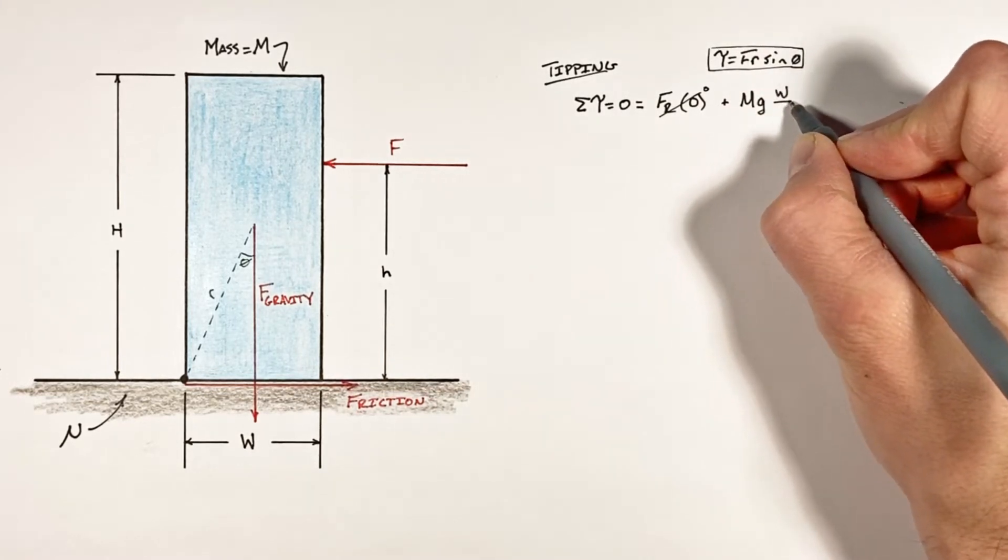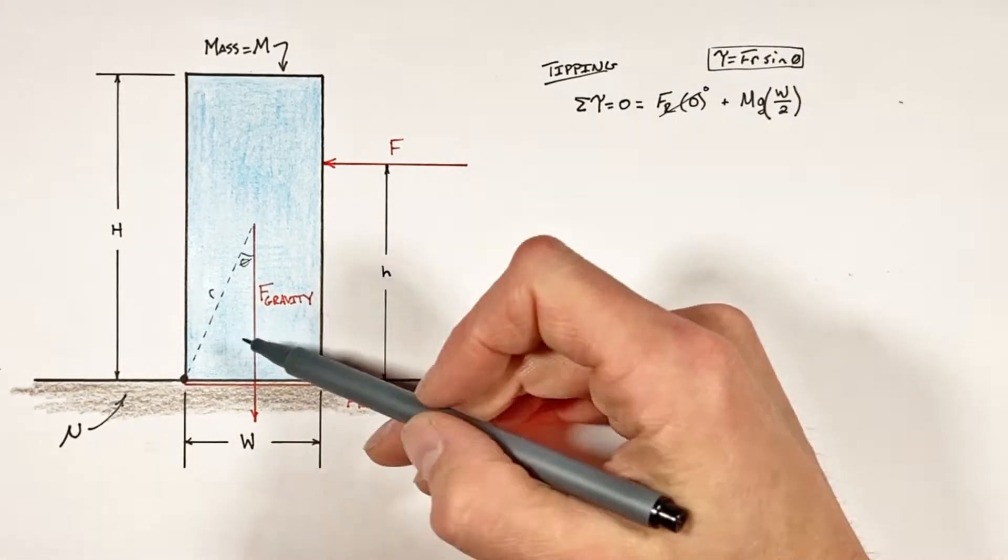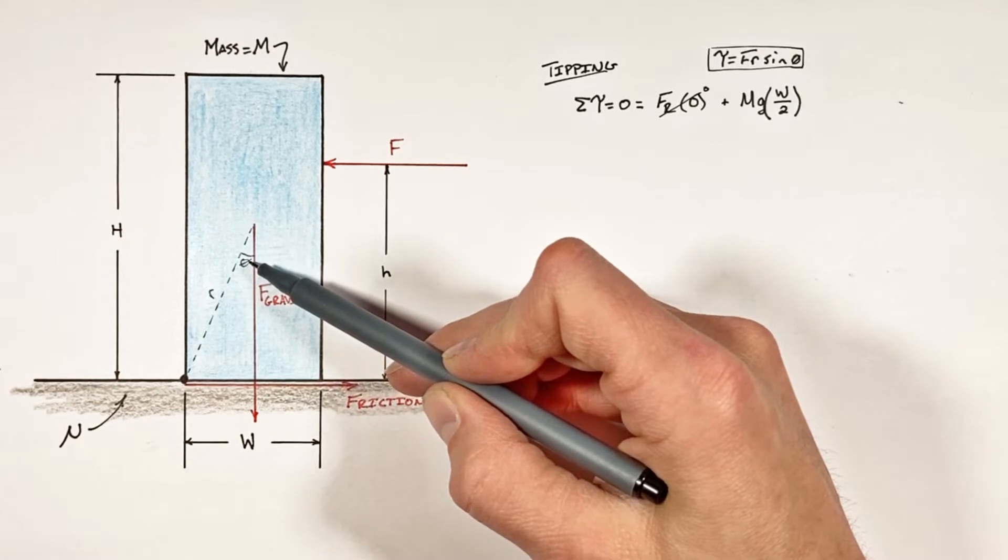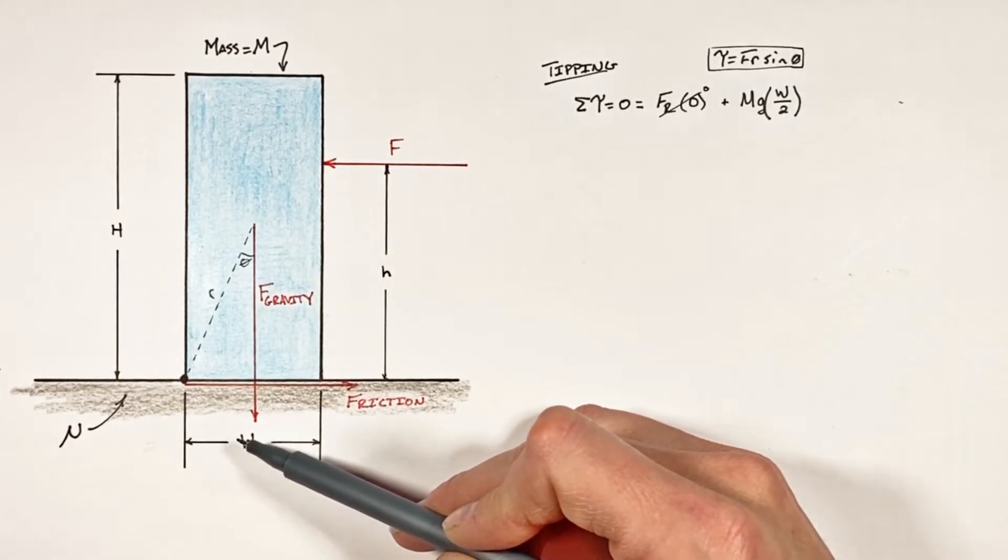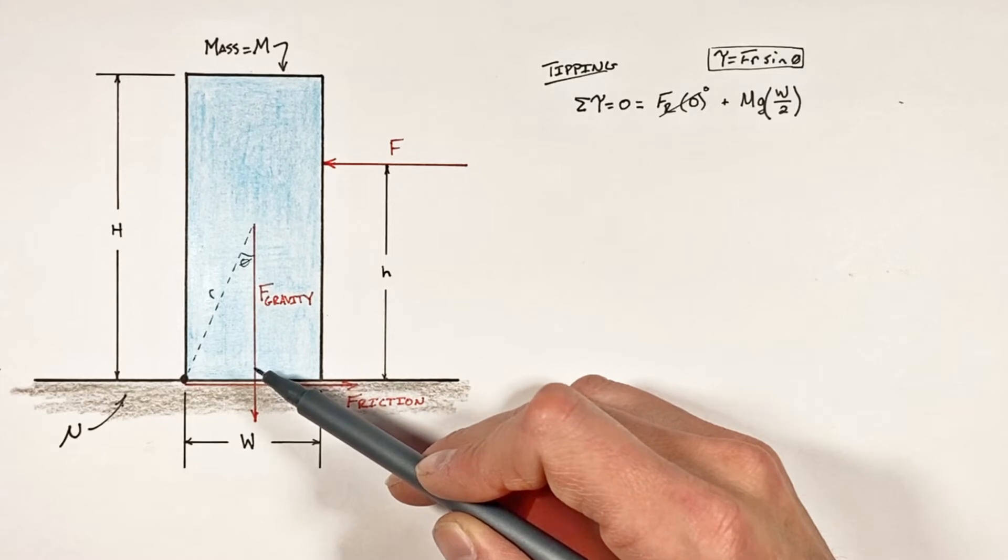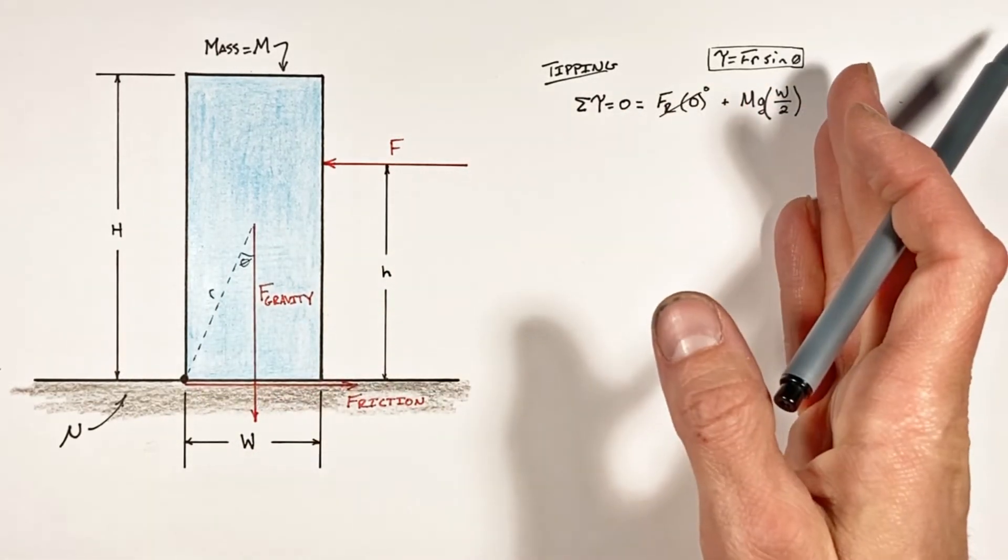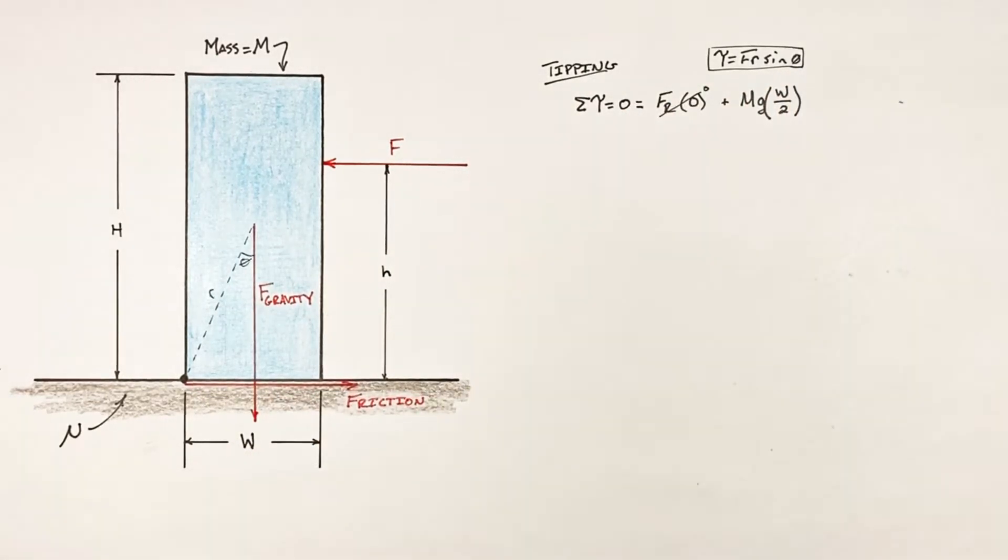Now reducing this radius vector and angle down into this dimension w over two is what's called the effective moment arm. If you want to see more about that, just click up here.